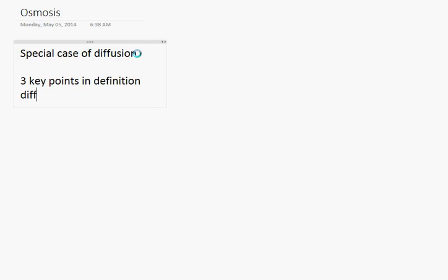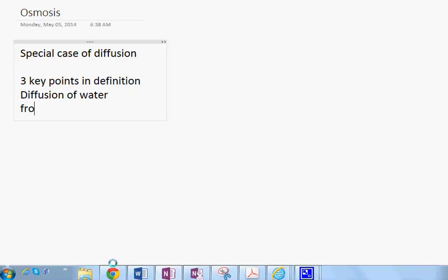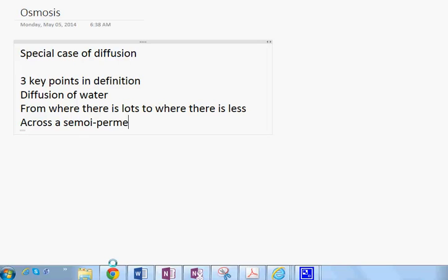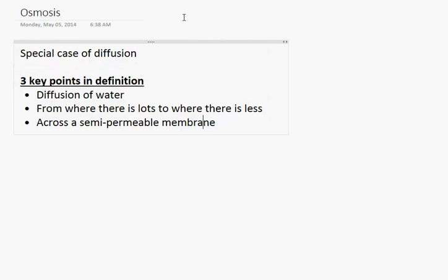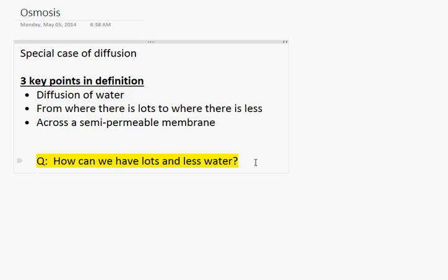Now, osmosis is a special case of diffusion that only involves water. There are really three key points in the definition for osmosis. It's the diffusion of water from where there is lots to where there is less across a semi-permeable membrane. The big question really is, how can we have lots and less water? And the answer to this question is to dilute the water with dissolved substances.